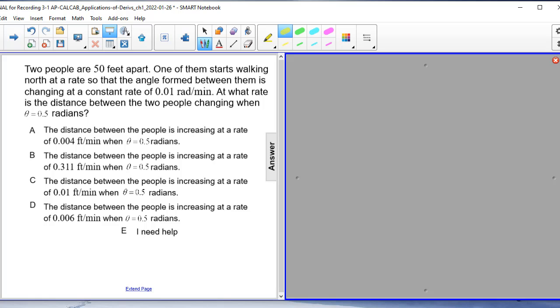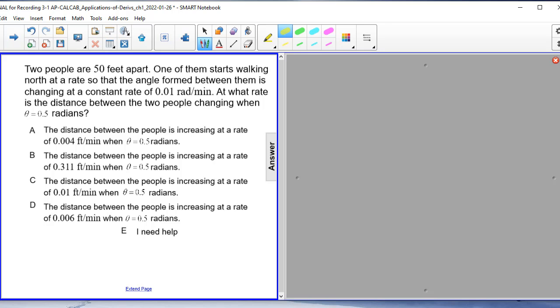At what rate is the distance between the two people changing when theta is equal to 0.5 radians? Now what we know from here is that first of all, we know that two people are 50 feet apart. So that's a given. We also are told that the angle is changing. We're given that rate of change as 0.01 radians per minute. That's going to be our d theta dt.